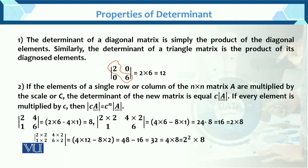Similarly, for a triangular matrix — suppose we have the matrix [2, 1; 0, 2; 0, 0] — its determinant is the multiplication of the diagonal elements: 2 × 2 = 4, and 1 × 0 = 0. This is a lower triangular matrix, so the determinant is the product of its diagonal elements.